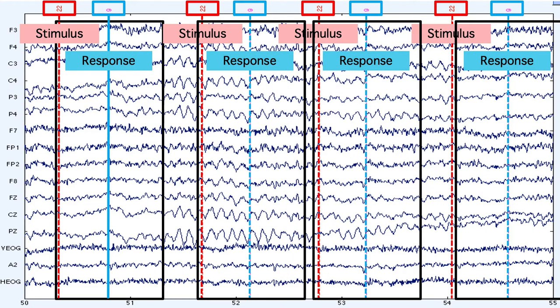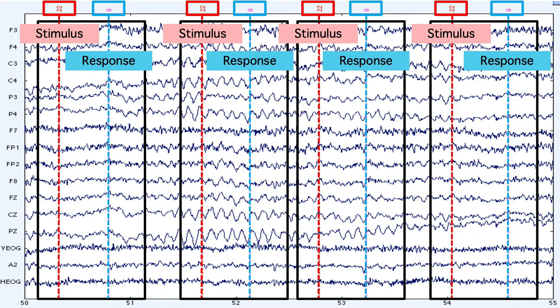Sometimes we like to look at response locked activity, in which case each epoch might go from 500ms before the response to 500ms after. But for the rest of this video, we're going to focus on stimulus locked averages.